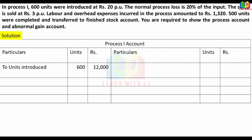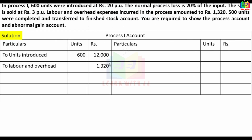Labour and overhead are Rs.1,320, also debited to the process account. The normal loss is 20% of the input. 20% of 600 units = 120 units. These 120 units are sold at Rs.3 each, so scrap value = 120 × Rs.3 = Rs.360, credited to the process account.